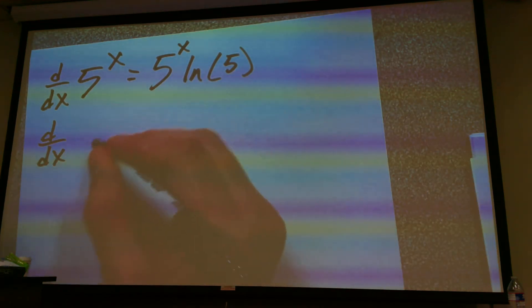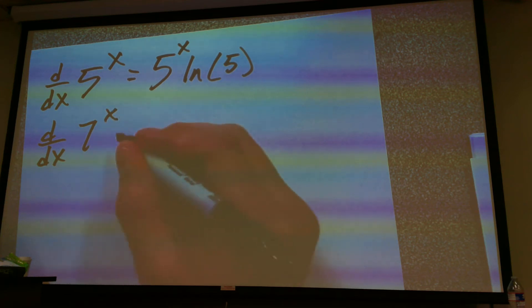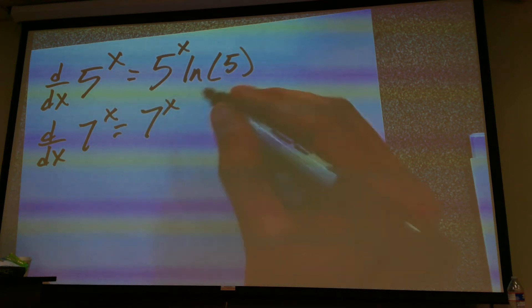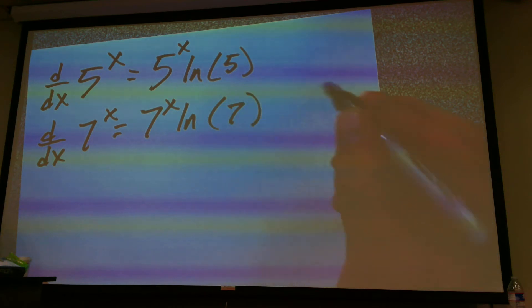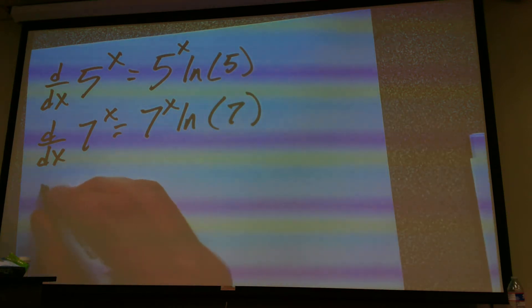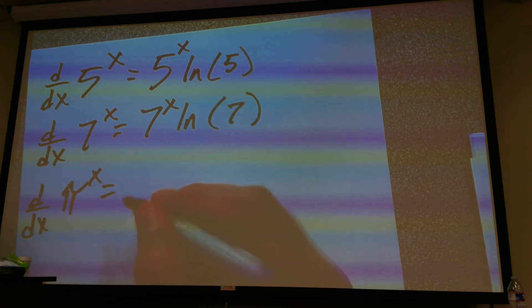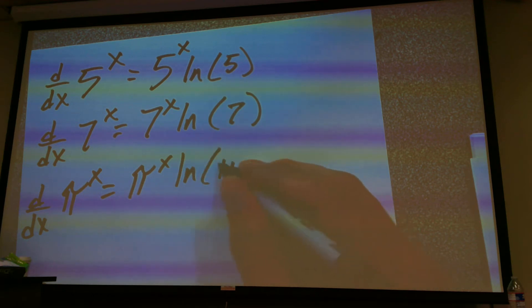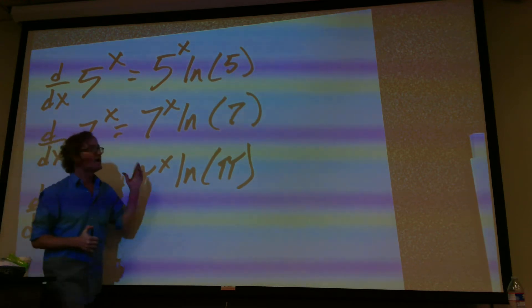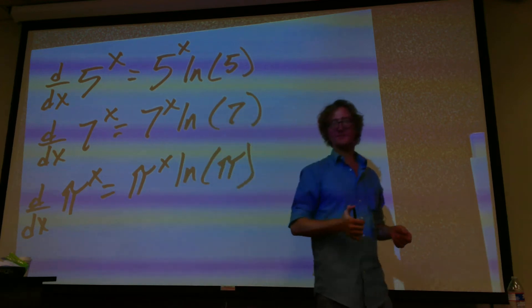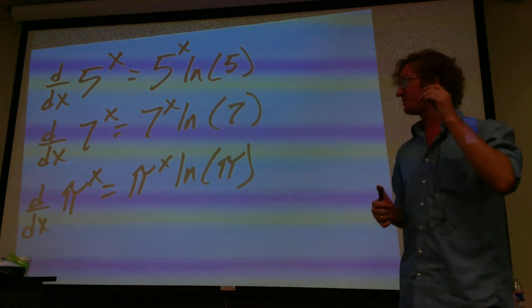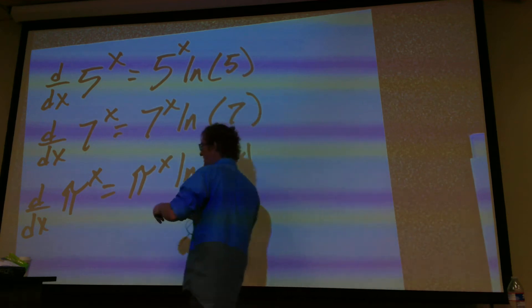5 to the x times the natural log of 5. So, let's say we were doing the derivative of 7 to the x. 7 to the x times the natural log of 7. It doesn't matter what number I did. Pi to the x. So, pi to the x times the natural log of pi. So, whenever you take a derivative of something that does not have the e as the base, it's going to spit out just this natural log of whatever the base is.